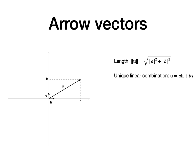Secondly, if h and v denote the horizontal and vertical unit vectors respectively, then u can be written as a linear combination of h and v, that is, u equals a times h plus b times v. The coefficients a and b are unique, meaning that different coefficients result in different vectors.